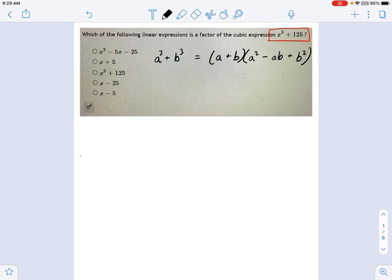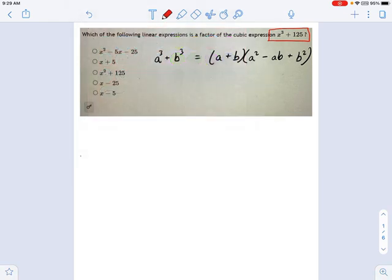And what I want to do first—here it is. This is what a cubed plus b cubed equals, if you factor it out.